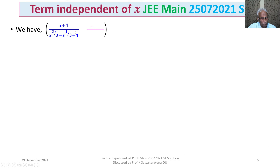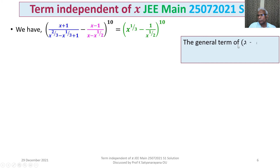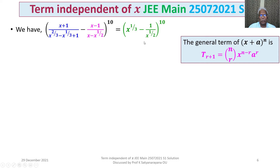Now it is a binomial. We recall what is the general term for (x + a)^n. The general term T(r+1) is equal to nCr times x^(n−r) times a^r, where n is a positive integer.